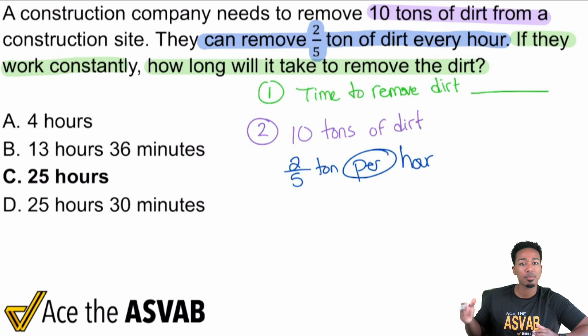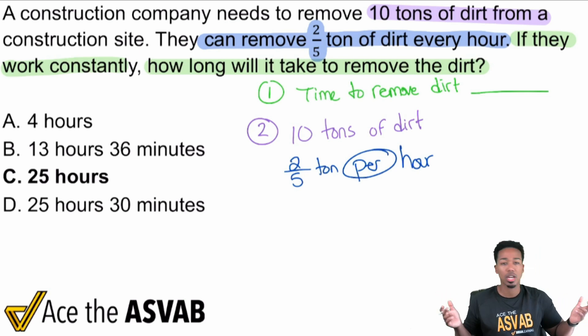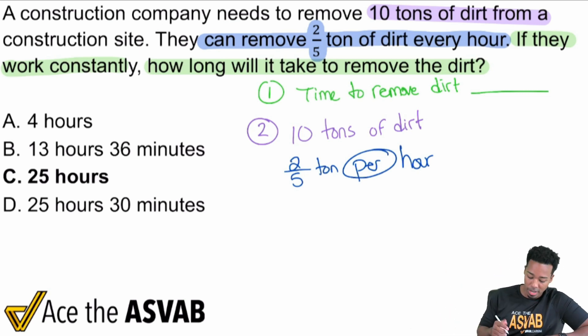One more way to think about it is thinking about distance equals rate times time. Distance equals rate times time also applies to non-distance problems. If you want to join me in my math bootcamp and live classes, I talk about exactly how it's not just about distance. It can be anything you're trying to accomplish. So I'm going to tackle this the regular way here. Here's what we're trying to achieve: 10 tons. We know it's 2/5 ton per hour. And since we're trying to work backwards to get the time, not the result but the time, we need to divide.